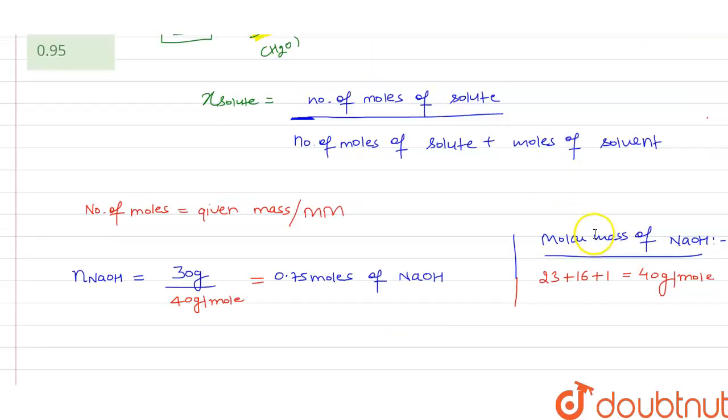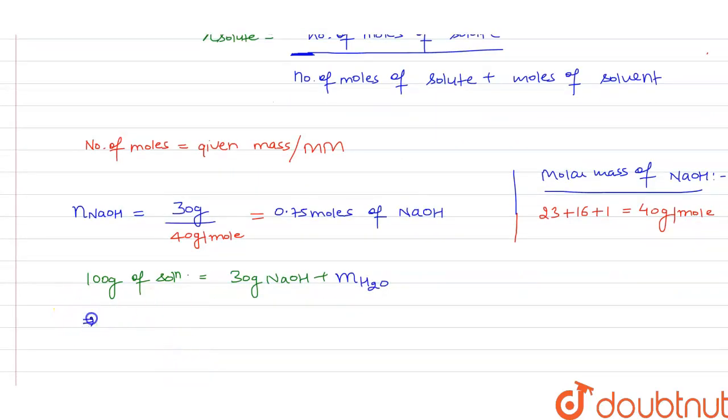We have 100 gram of solution, which comprises solute and solvent. We have 30 gram of NaOH as solute and m gram of water. On solving, the mass of water equals 70 gram.